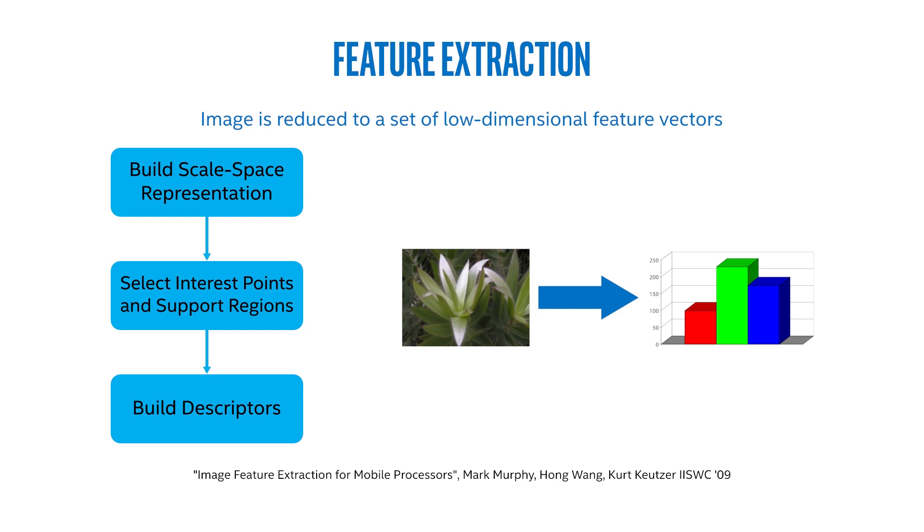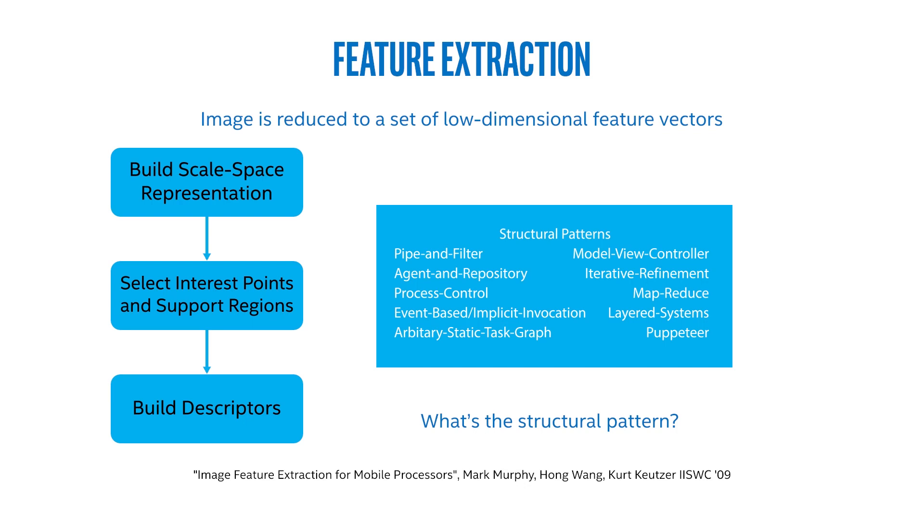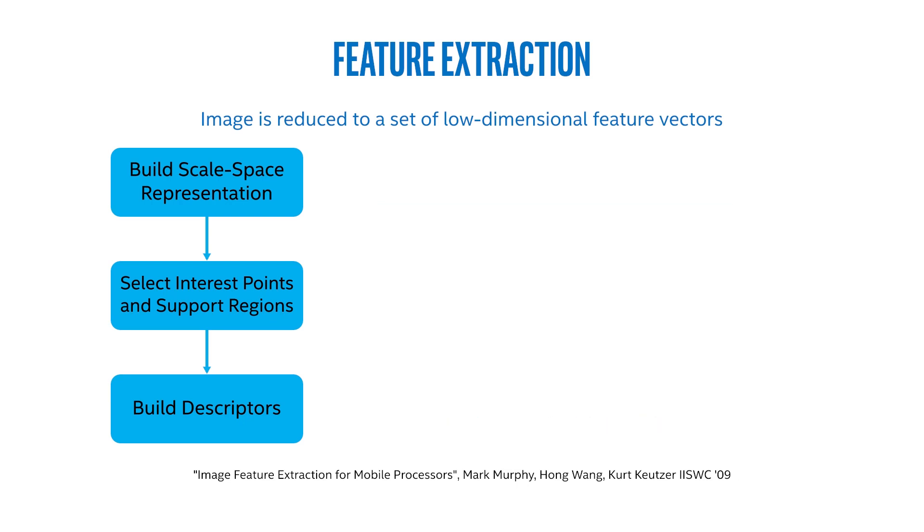On the left-hand side, we've expanded feature extraction down to build scale space representation, selecting interest points, and building descriptors. What's the structural pattern of this? Again, it's pipe and filter. Now, looking at each of the individual filters, we see for the build scale space representation, that's a computation structured grid. For selecting interest points and support regions, we actually have another structural pattern, MapReduce, and each of those functions being mapped as dense linear algebra. And then finally, for building the descriptors, we have a MapReduce again for a structural pattern inside that filter, and then the computation side of the maps are structured grid.